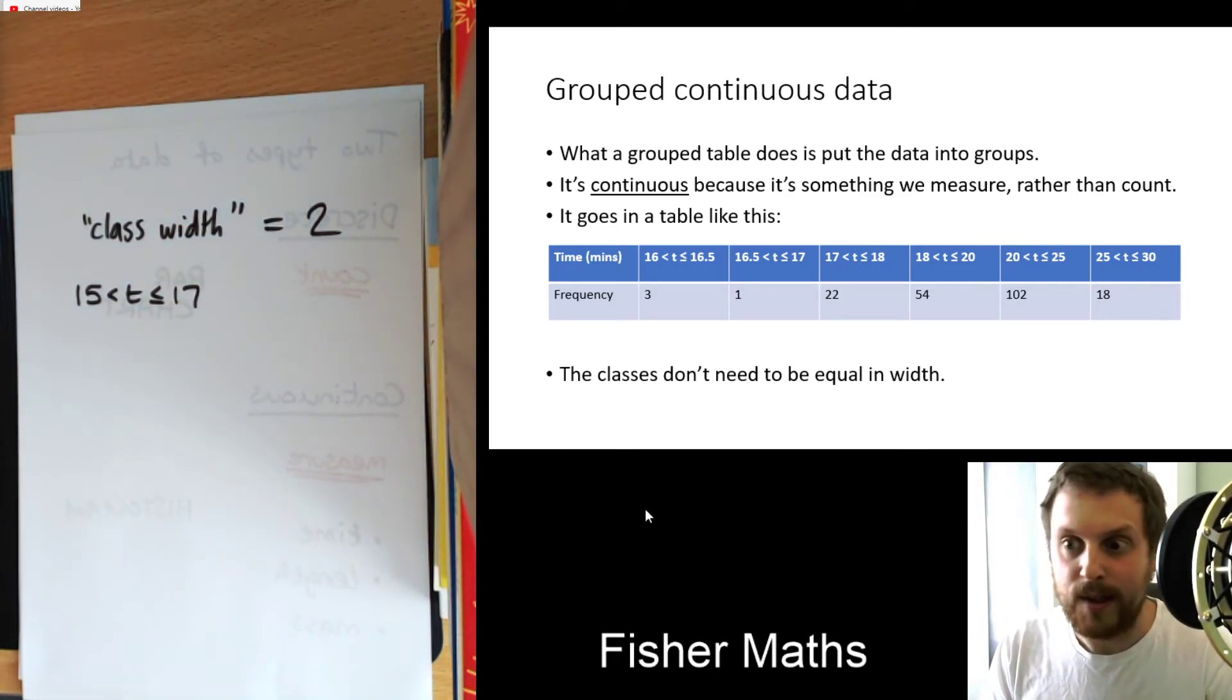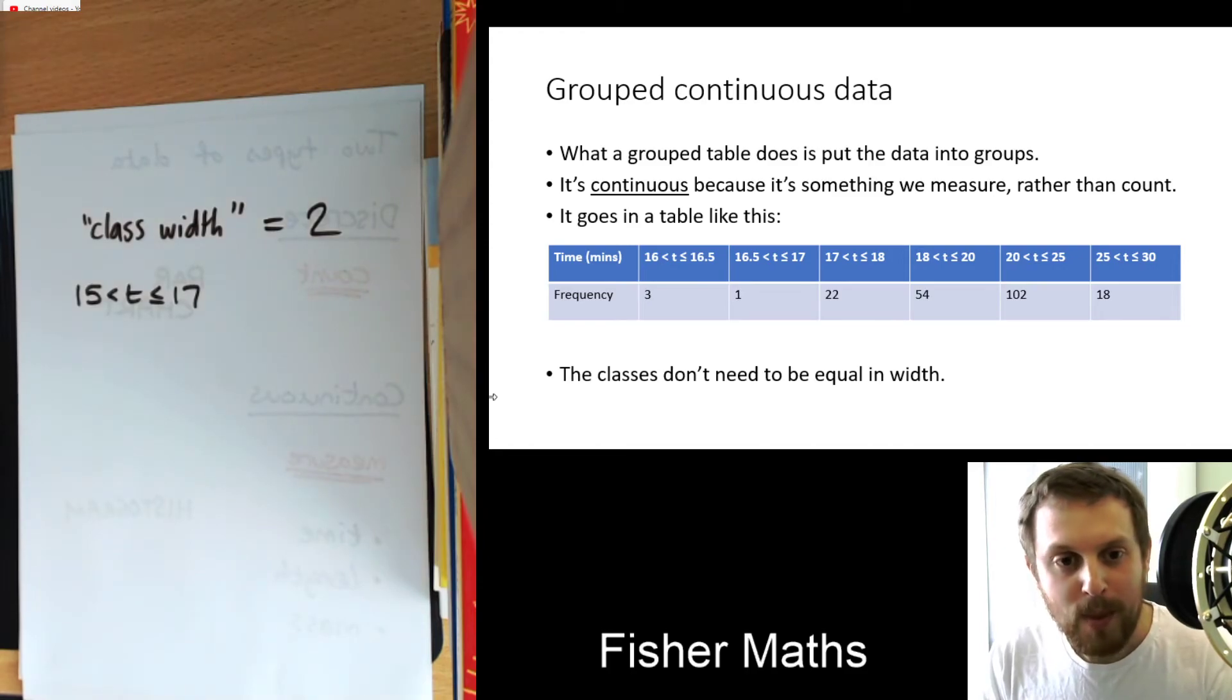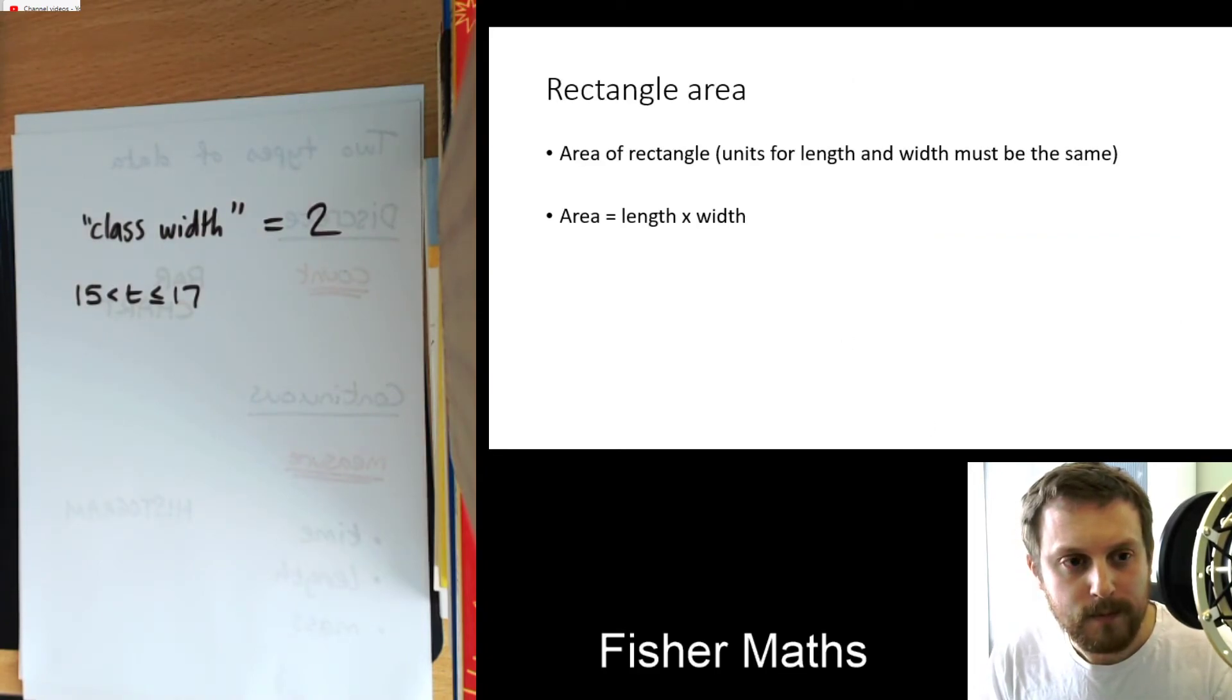I mean, don't get me wrong. Clearly it's nice if they're all the same width, but they don't have to be. So as I say, we've got a half, a half, 1, 2, 5, 5. They don't all need to be the same width. They don't have to start small and get bigger. They can just be basically any widths, any widths at all.